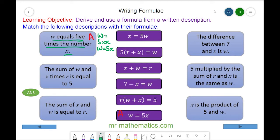For the next one, the sum of w and x times r. So w and x, this is the sum times r, so all of this is multiplied by r. We can put this in brackets and put r on the outside, and this means r multiplied by w add x, and that is equal to five. But like I just said, we don't include the times symbol, so we have r lots of w plus x is equal to five.